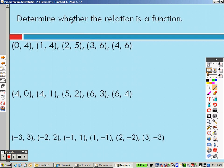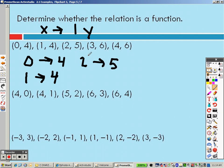Decide whether the relation is a function. What that means is every x goes to 1y. So look at it like this: 0 goes to 4. Does 0 go to anything else? Nope. 1 goes to 4. Does 1 go to anything else? Nope. 2 goes to 5. Does 2 go to anything else? Nope. 3 goes to 6. Does 3 go to anything else? Nope. Does 4 go to anything else? Nope, just 6. Each one goes to 1y. So this would be a yes, because each one goes to one item.